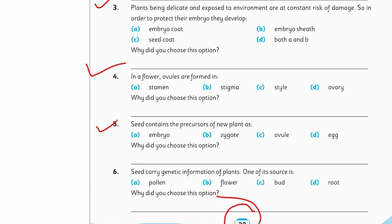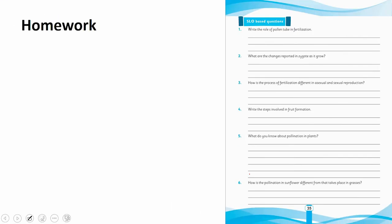Question number 6: Seeds carry genetic information of plants. One of its sources is — pollen, flowers, floral buds, or roots? What structure carries this genetic information? After finding the right answer, write the reason. Then we will move to SLO-based questions on page 35.